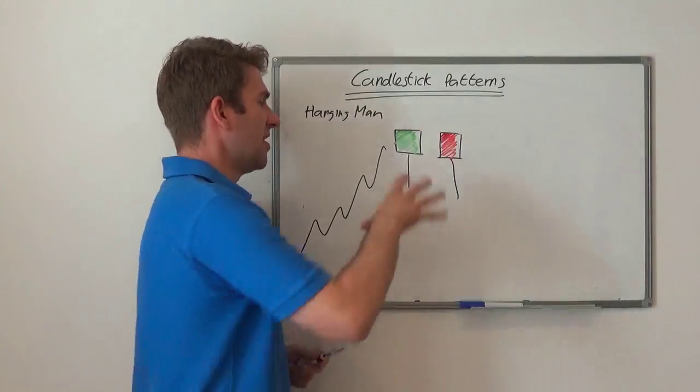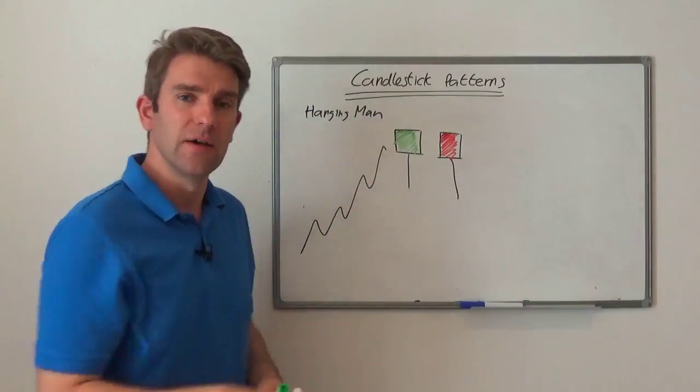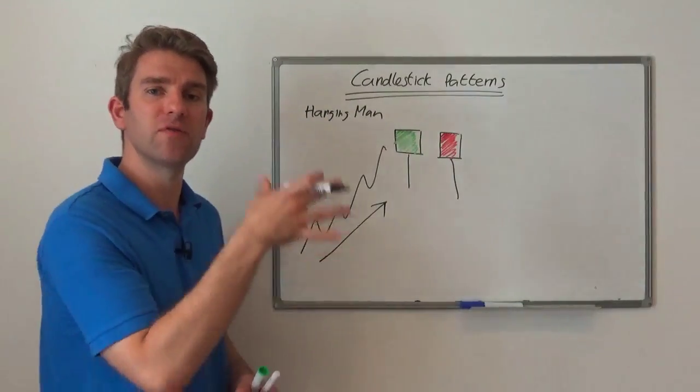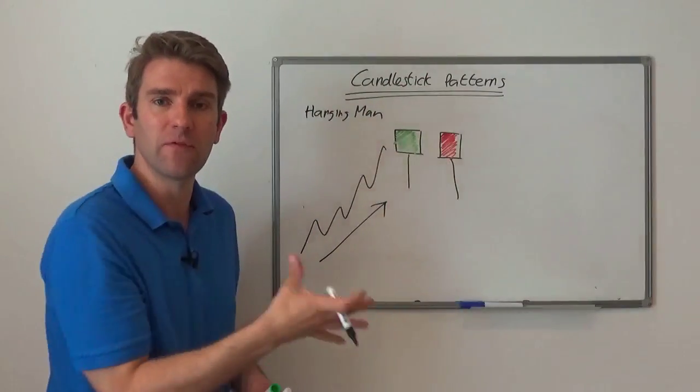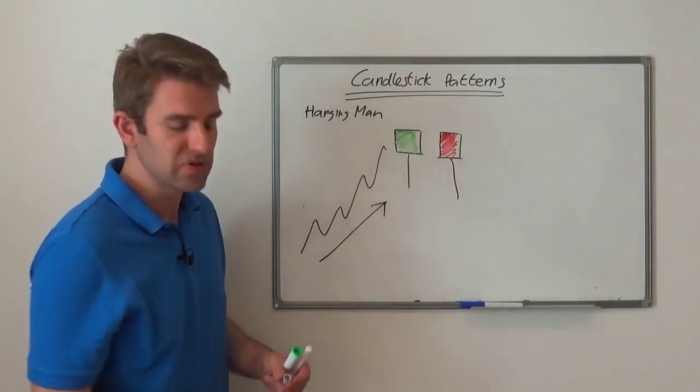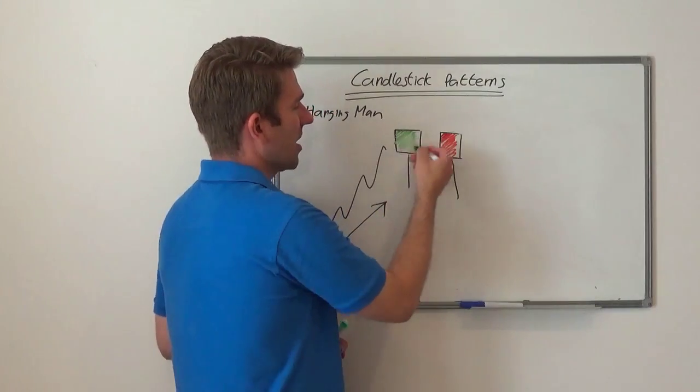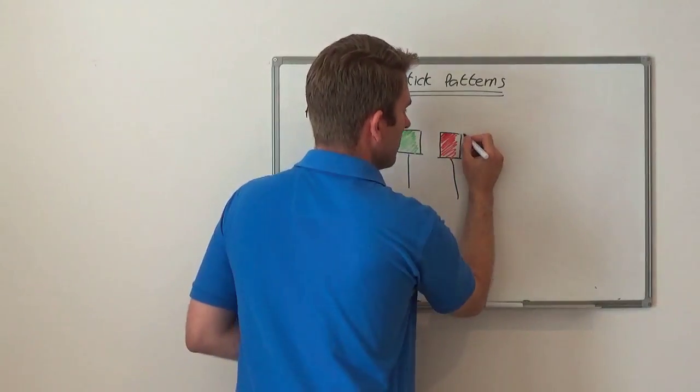Generally, you get a sell-off in the early part of the day. In other words, you're in an uptrend already, you've got strength, and you're looking for some kind of reversal. Then you see a sell-off in the early part of the morning that recovers and closes near the highs.